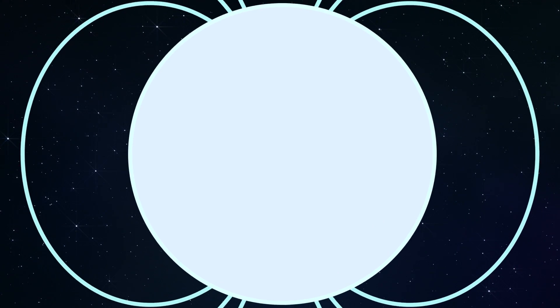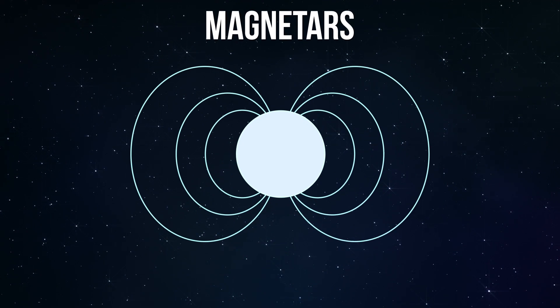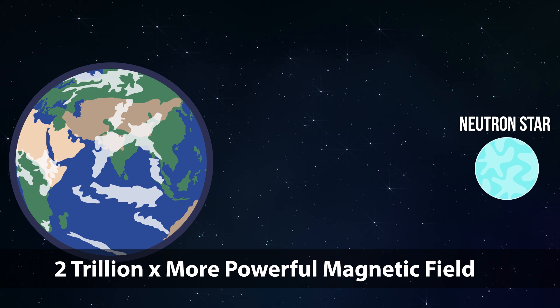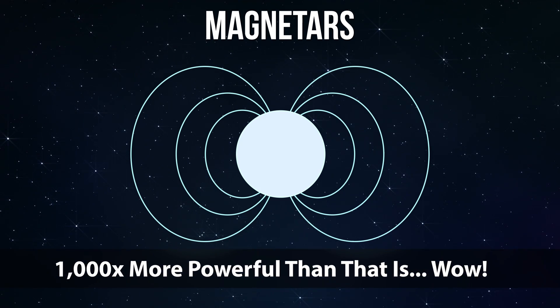While all of this sounds pretty extreme already, a small percentage of neutron stars are born as even more extreme objects called magnetars. All neutron stars have incredibly powerful magnetic fields, usually 2 trillion times more powerful than the magnetic field that you're currently experiencing on the Earth's surface. But magnetars have a magnetic field 1,000 times more powerful than even that. This makes magnetars the most powerful magnets in the known universe.